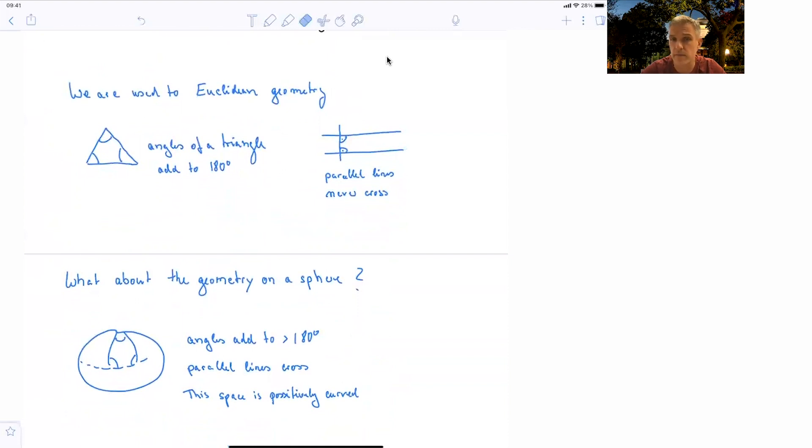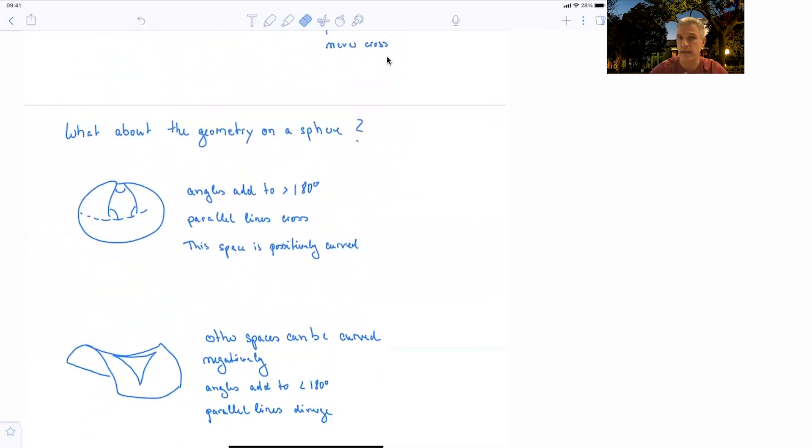But you can have the opposite example, like on a saddle. You can have other spaces and other curved spaces, and they can be negatively curved. In this example, if you add up all angles, you find they add up to less than 180 degrees. Parallel lines will not cross, but they will diverge.